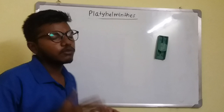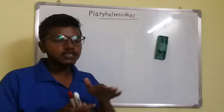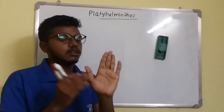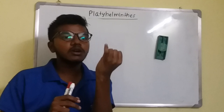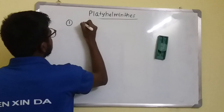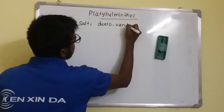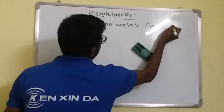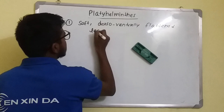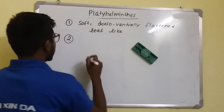Coming on to the general characters: as they are flatworms, their bodies are soft and dorsoventrally flattened. If we consider the ventral and dorsal sides, both sides are flattened relative to each other. Their body is soft, dorsoventrally flattened, and leaf-like, because a leaf is also flat.